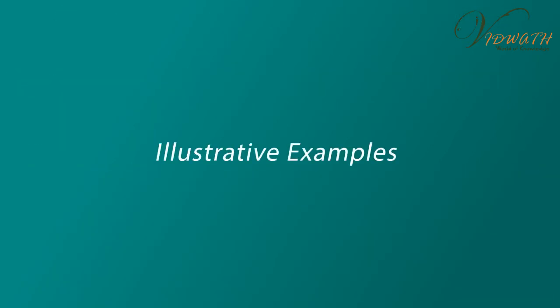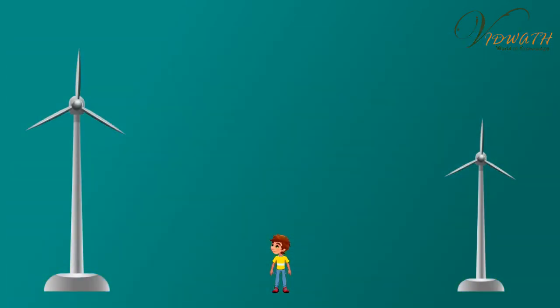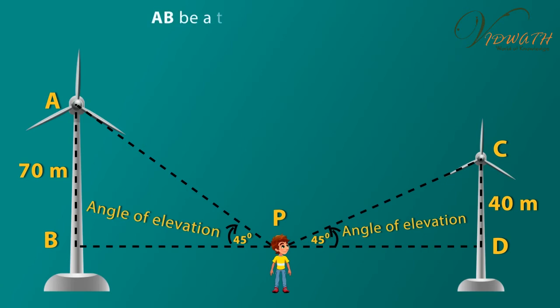Illustrative examples. Example 1: Two windmills of height 70 meter and 40 meter are on either side of the field. A person observes the top of the windmills from a point in between the towers. The angle of elevation was formed to be 45 degree in both cases. Find the distance between the windmills.